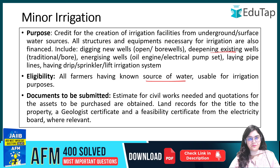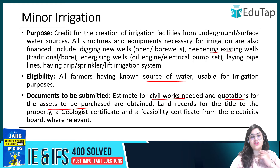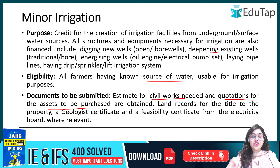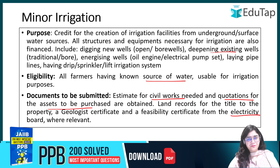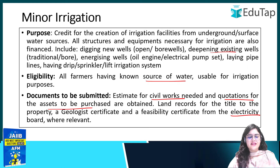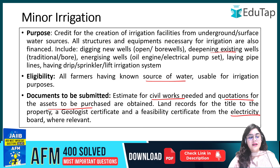For minor irrigation, you have to submit an estimate for civil works and quotations for the assets to be purchased, land records, a geologist certificate, and a feasibility certificate. In earthquake-prone or landslide areas, a geologist certificate must be submitted along with clearance from the electricity board.